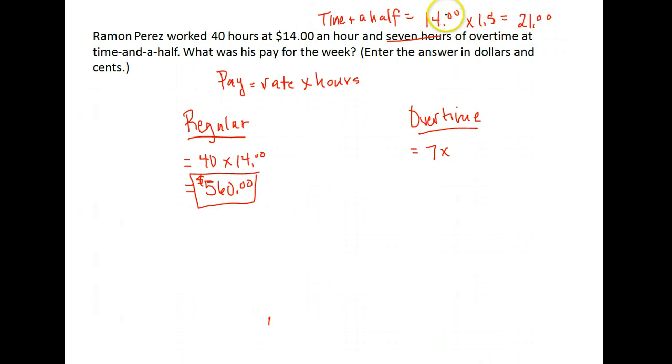He gets the $14 plus half more, plus seven more, $21 an hour. So now we can use that to find our overtime pay. He worked seven hours at $21 an hour for his overtime.